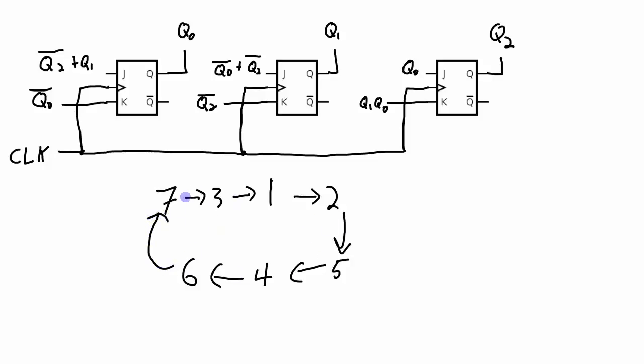There was one state in this 3-bit counter that didn't fit into the loop, and that was when all the bits are 0. If that's the case, if all the bits are 0, we don't want to get stuck in that state. So we defined our system so that if we are in that state, we transition to state 7.